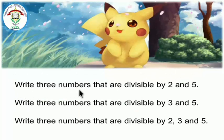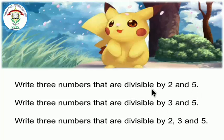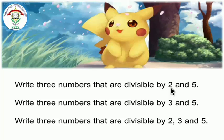Write 3 numbers that are divisible by 2 and 5. We need to determine any 3 numbers divisible by both 2 and 5. Divisible by means the same as multiple of. 2 is not in the times table of 5, and 5 is not in the times table of 2, so there is no direct relation between 2 and 5.